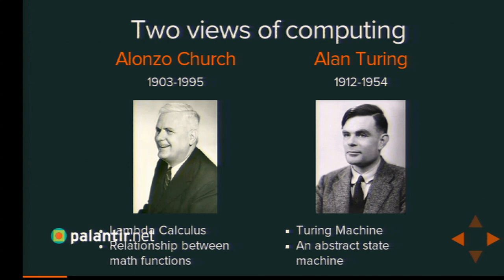But these two men, very respectable mathematicians and scientists, looked at each other's work and said, 'Wait a minute, this looks familiar.' And they went on to prove that these two ways of looking at the world are equivalent. There is no problem in computer science — in programming, in computers — that you can solve only one way. You can always approach it in both ways.